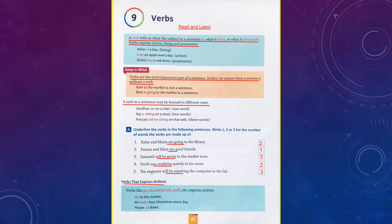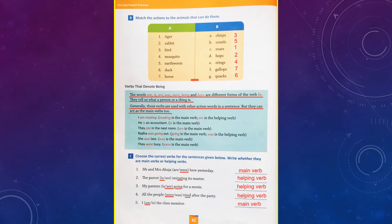Let's turn the page to 42. On page number 42, they have given us Exercise B: match the actions to the animals that can do them. In column A, they have given us seven names of animals, and in column B they have given us the actions that these animals usually do, so we need to match column A with column B. Remember, now that you are in Form 4, we are learning how to write numbers, so you are not supposed to draw lines — you are supposed to write numbers the way I have written on the slide.